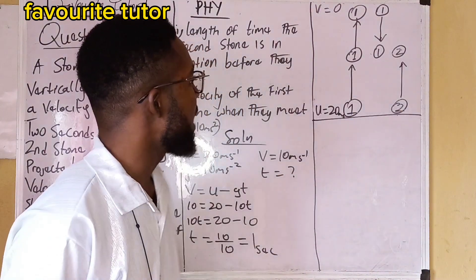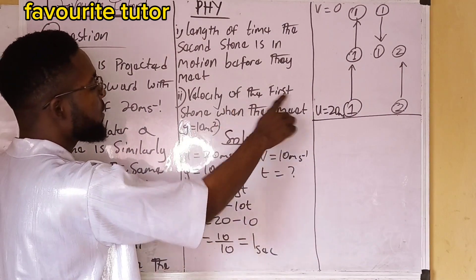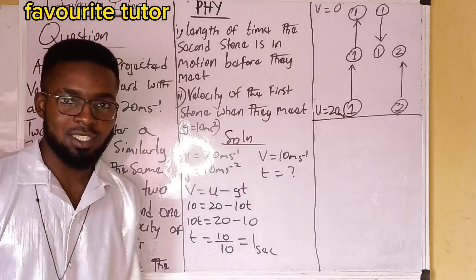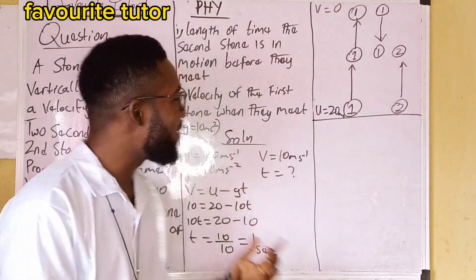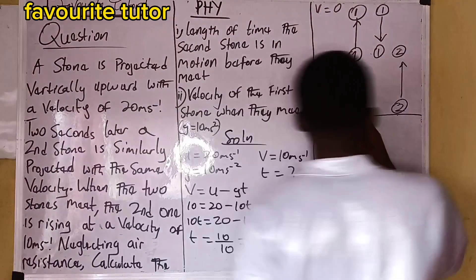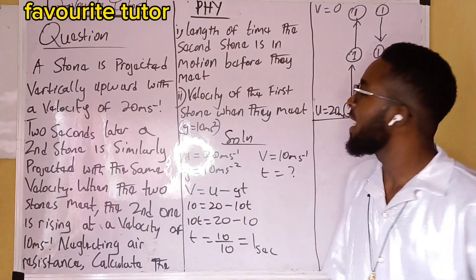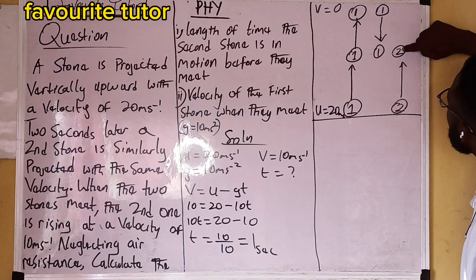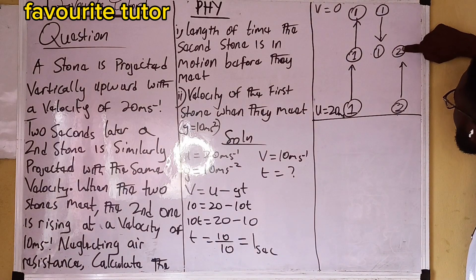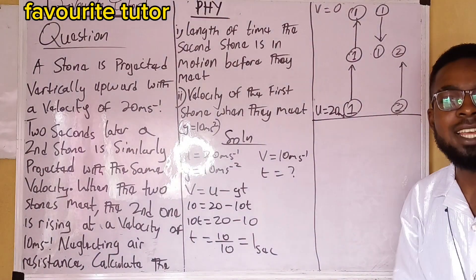Now for Part 2 — the velocity of the first stone when they meet. This is almost given by the question itself. Since the two stones are similar and we are neglecting air resistance, the velocity of the second stone at the meeting point is 10 m/s rising, which means the velocity of the first stone at that same point is also 10 m/s.